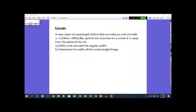The laser beam of wavelength 633 nanometer falls normally on a slit of width A equals 0.24 millimeter. Diffraction patterns are observed on a screen 6 meters away from the plane of the slit. Part A: define and calculate the angular width. Part B: determine the width of the central bright fringe.